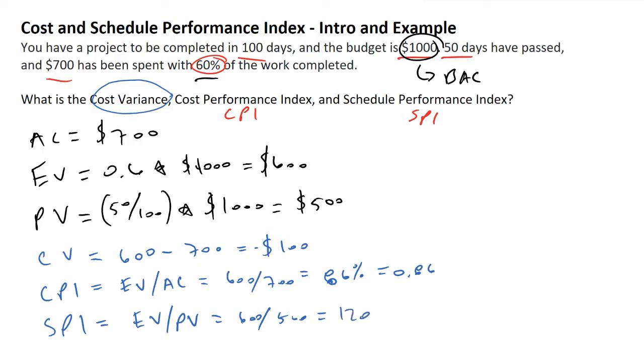Which is also equivalent to 1.20. And so what this means, what our Schedule Performance Index is telling us, because it's greater than 1, means that we're ahead of schedule. So in this scenario, we are ahead of schedule, but behind schedule in terms of how effective our dollars are being spent.